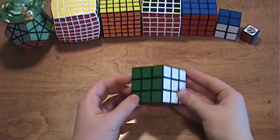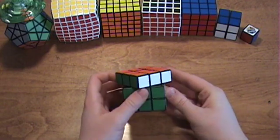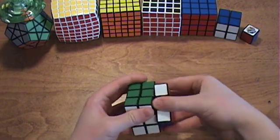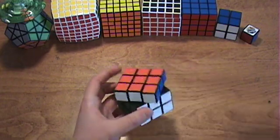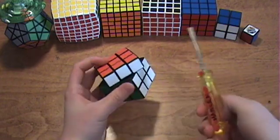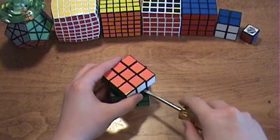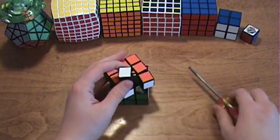To begin, rotate the top layer 45 degrees like this and then pop out the middle edge piece just like that. Mine comes out really easily but if it's very stiff for you, take a flathead screwdriver and just pop it out like that.